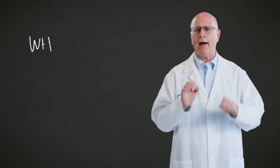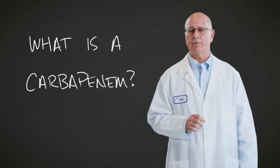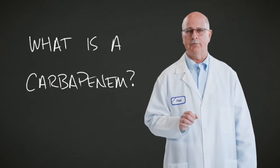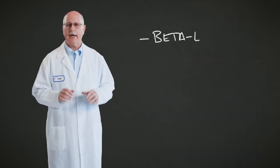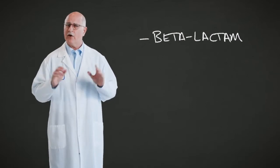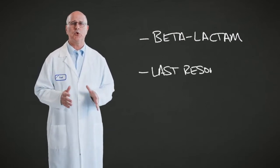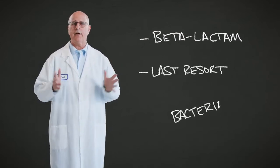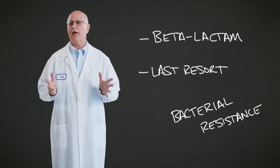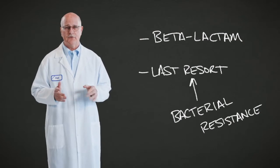But first, we need to discuss a very important and very powerful class of antibiotics: the carbapenems. Carbapenems are beta-lactam type drugs and they're often the drugs of last resort when other antibiotics have failed due to bacterial resistance.